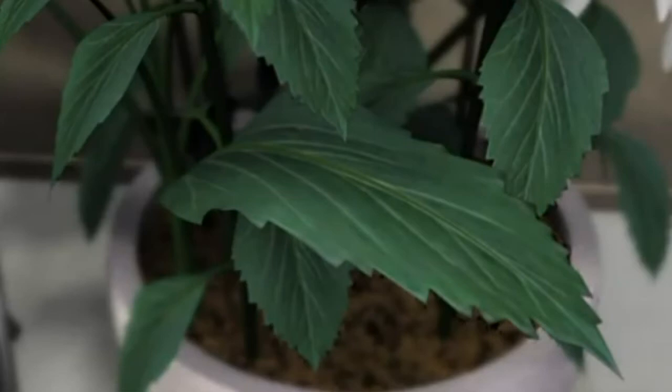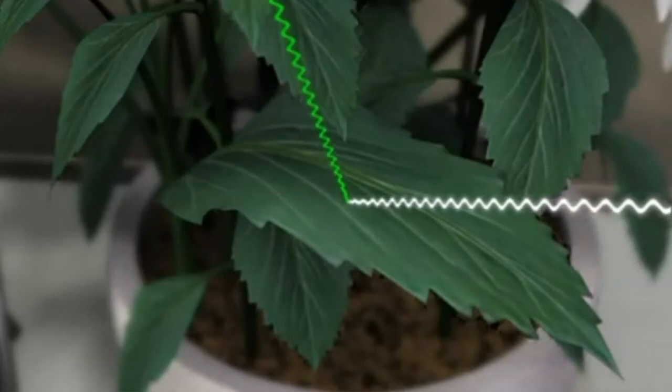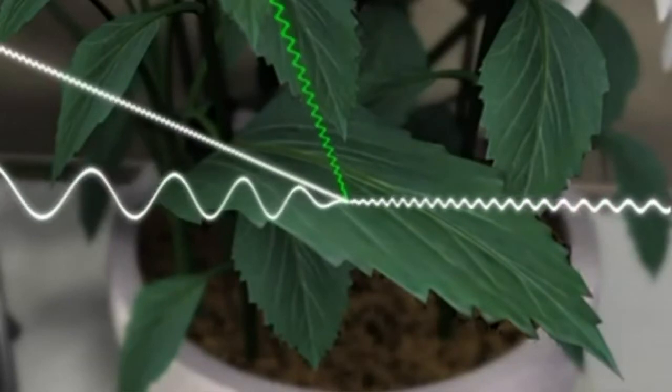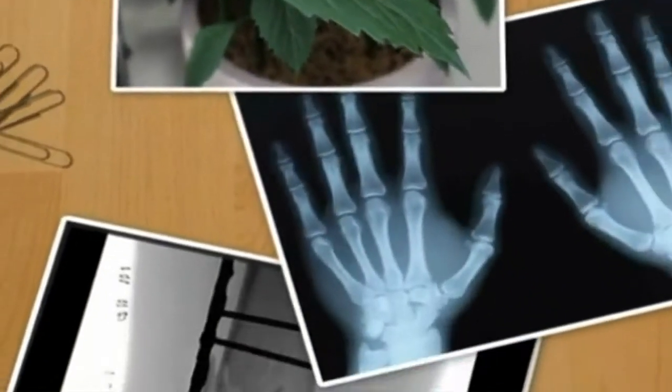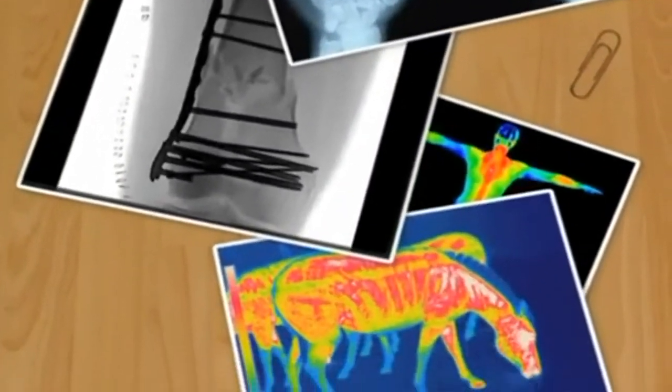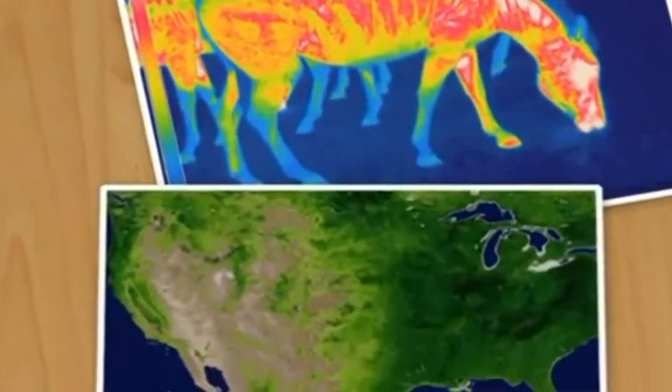Our eyes see the leaf as green but cannot tell us anything about how the leaf reflects ultraviolet, microwave, or infrared waves. To learn more about the world around us, scientists and engineers have devised ways to enable us to see beyond that sliver of the EM spectrum called visible light.